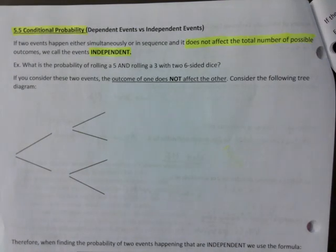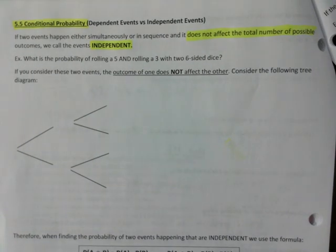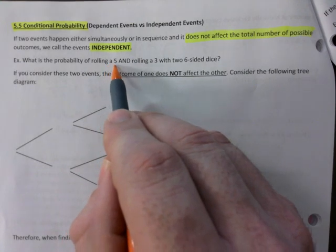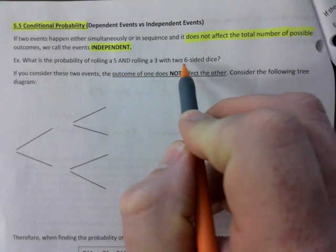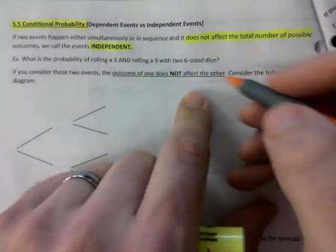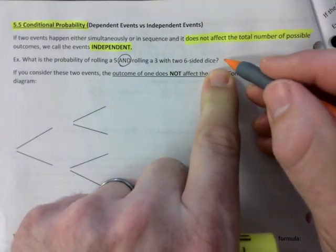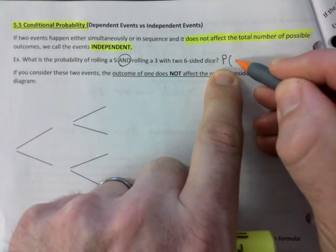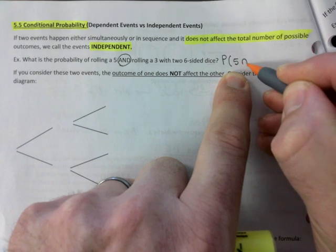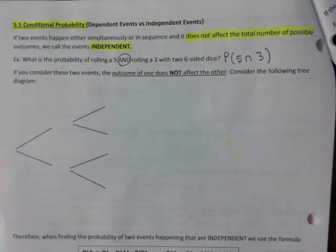So for example, I want to show you using a tree diagram here. What's the probability of rolling a five and rolling a three with two six-sided dice? One thing I want you to notice is the 'and' part. So we're going to go probability of rolling a five and rolling a three. It's not the sum, that's just what they're asking for.